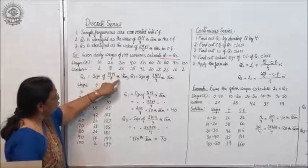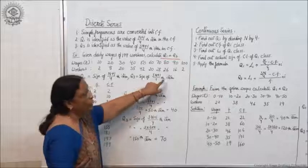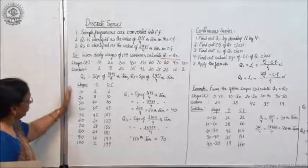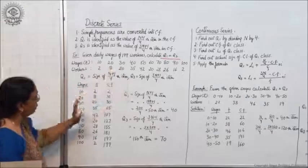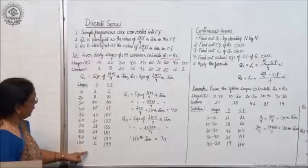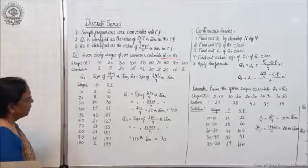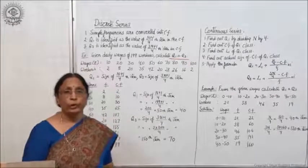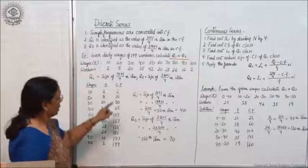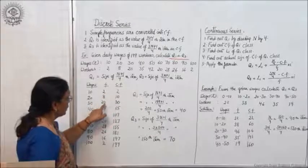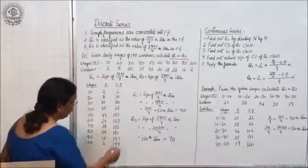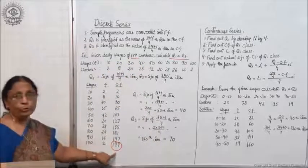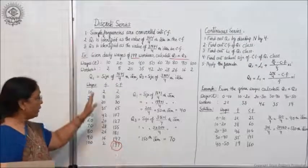Q1 is the size of the (N+1)/4 item, and Q3 is the size of the 3(N+1)/4 item. First, copy the data into table form — wages in the same order and frequencies in the same order. Then convert simple frequencies into cumulative frequencies. Adding: 2 plus 8 is 10, 10 plus 20 is 30, and so on, giving a total of 199.